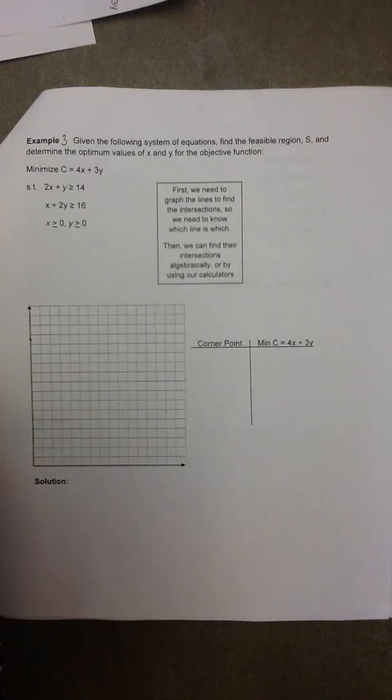Given a linear programming problem, this example will use the method of corners to find the corner points of the objective function, evaluate those corner points, and determine which yields the optimum solution.